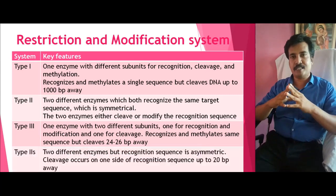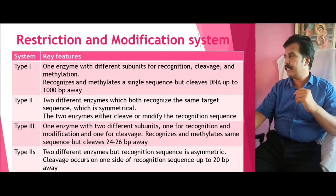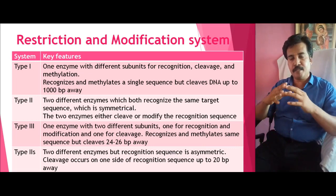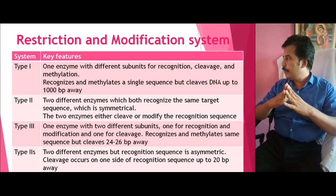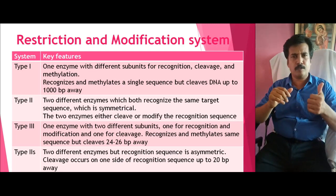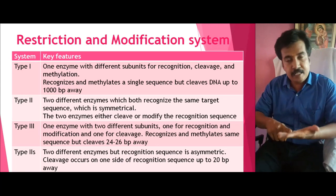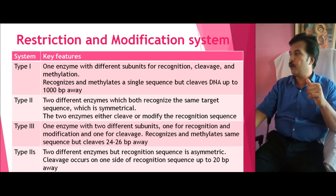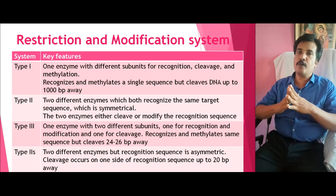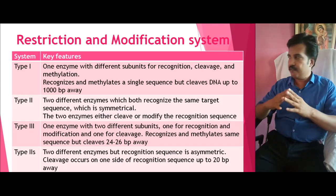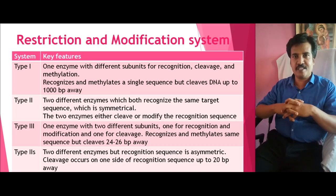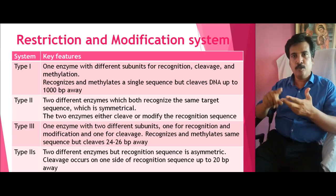The fourth type is Type 2S. Type 2S is similar to Type 2 in that it also involves two different enzymes. However, unlike Type 2 which recognizes a symmetrical sequence, Type 2S recognizes an asymmetric sequence. Both enzymes identify this asymmetric sequence, and cleavage occurs on one side of the recognizing sequence up to 20 base pairs away. These are the four basic classifications of the restriction-modification system: Type 1, Type 2, Type 3, and Type 2S.